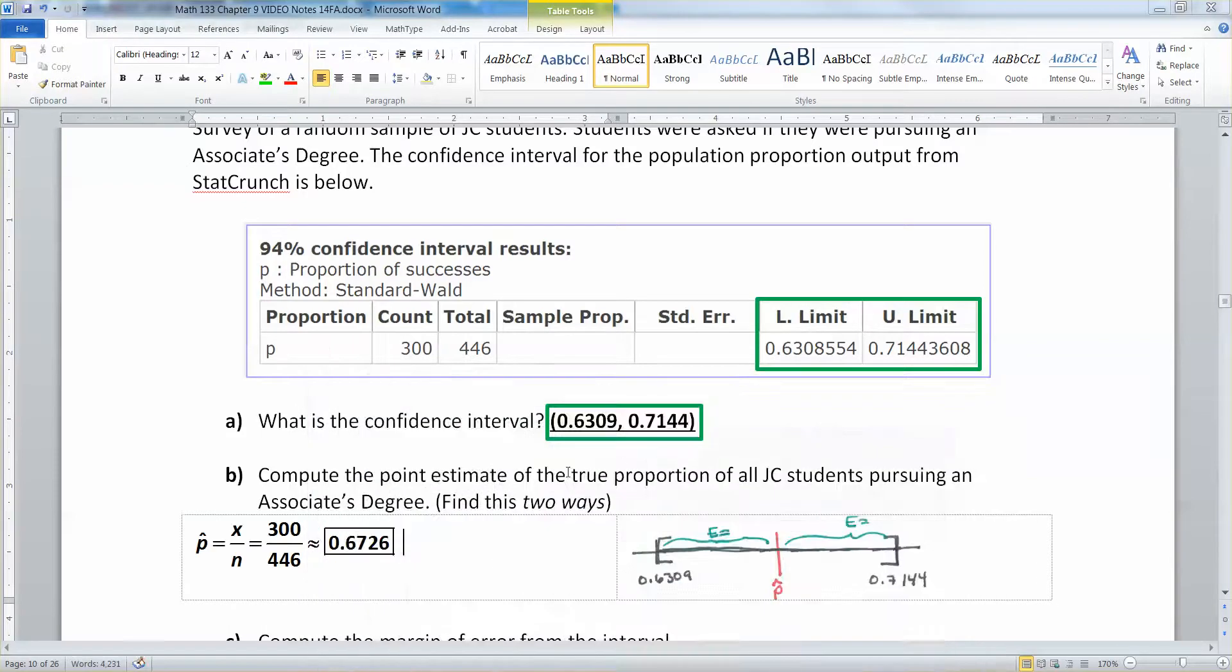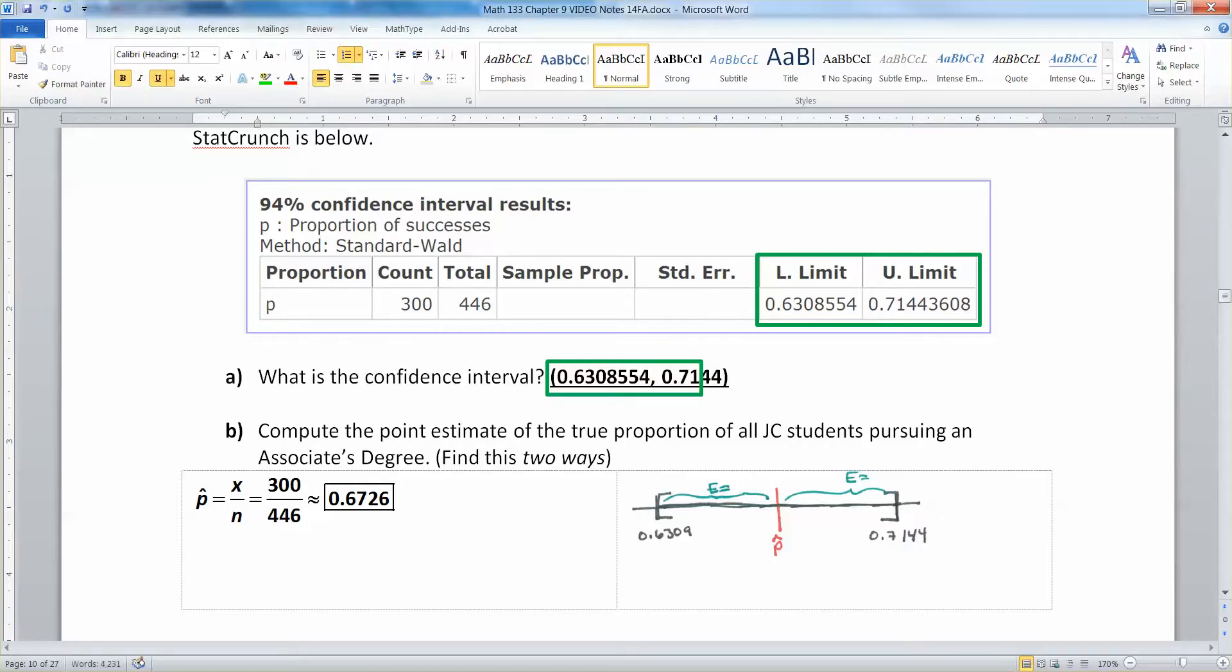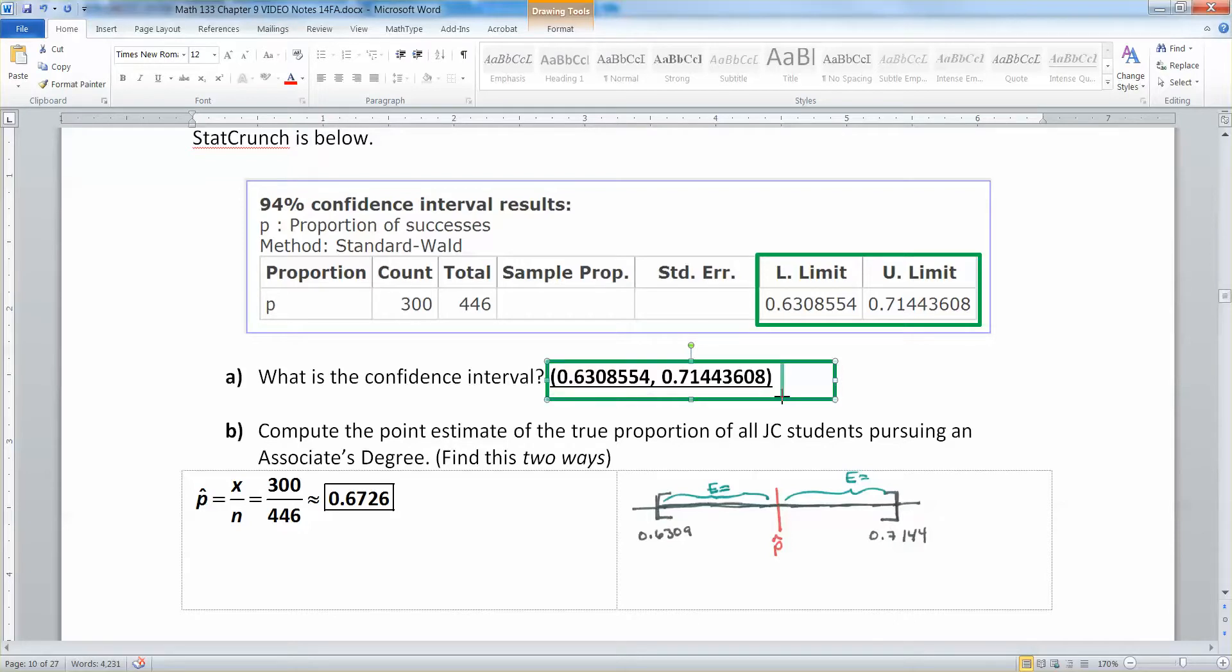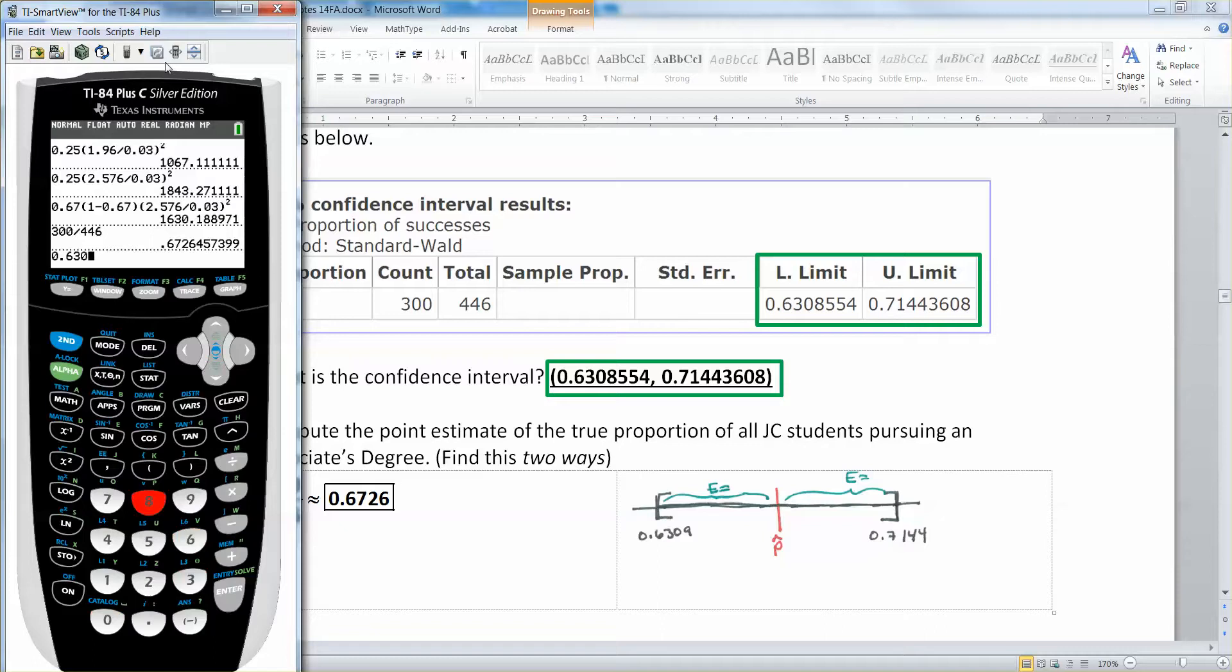That's using the formula. But it also said to find it two ways. So I'm going to use the idea about what a confidence interval is. It's got a low end here at 0.6308554, then a high end here of 0.7144. I should be able to add up those two numbers, the low number and the high number, add them up and divide by 2, and get the middle, the center. To keep all my accuracy when I do this, I'm better off using the full 8554 and the other number, 71443608. So it's 0.6308554 plus 0.71443608, add those up, then divide by 2, and you get 0.6726.